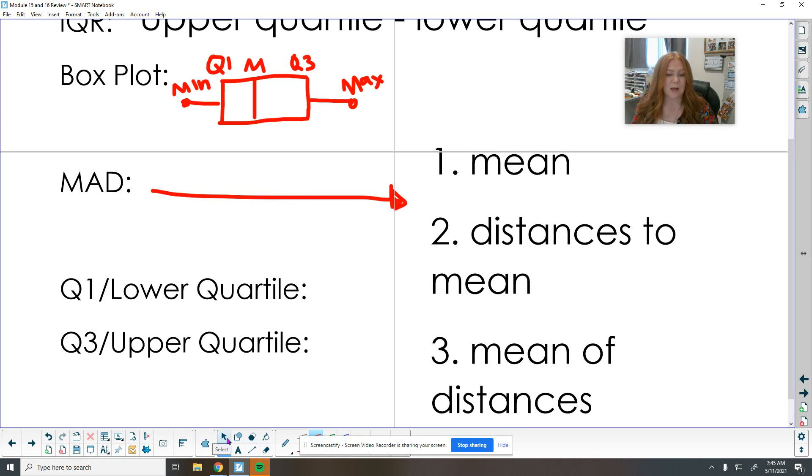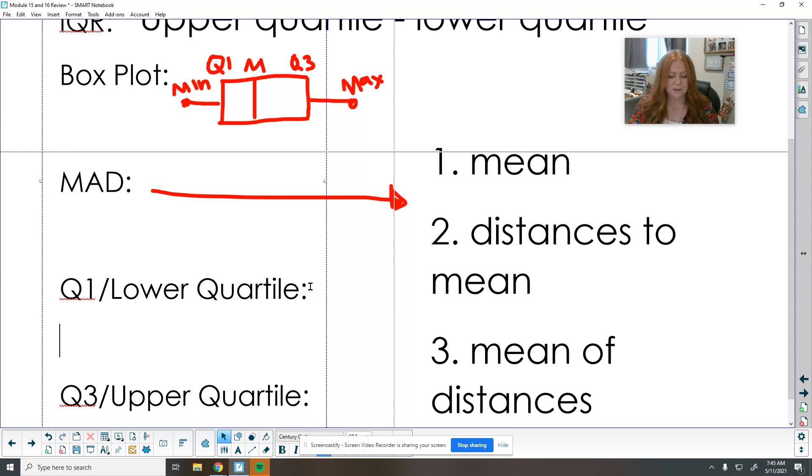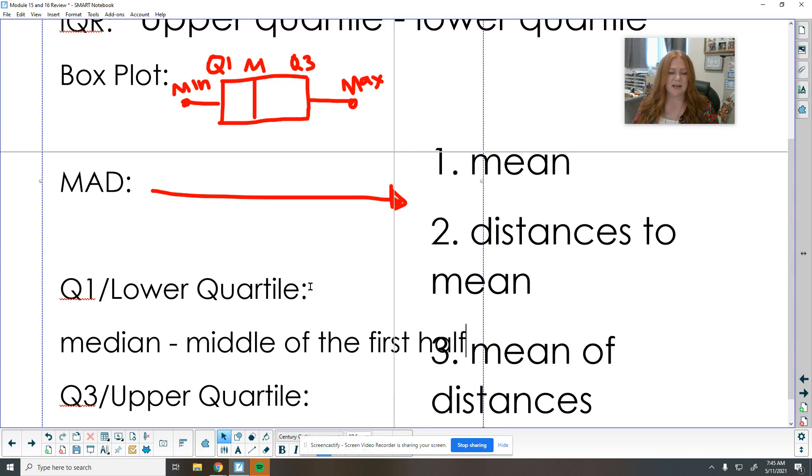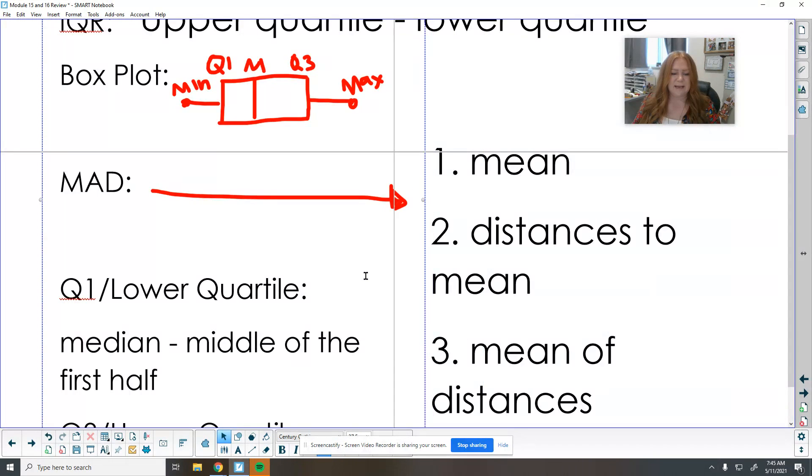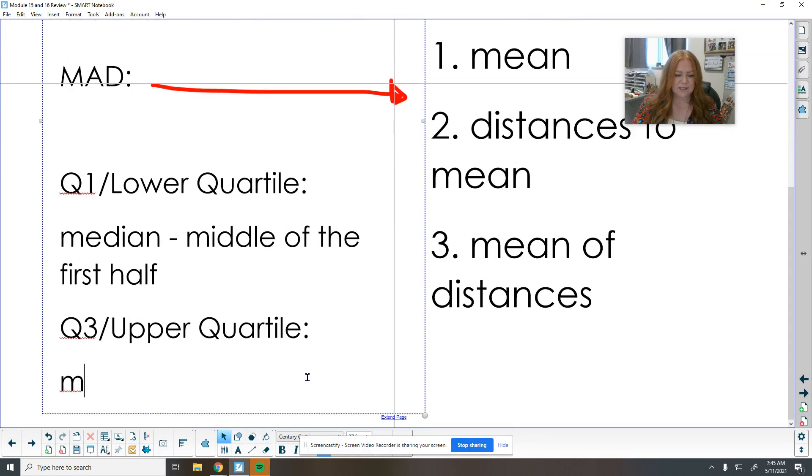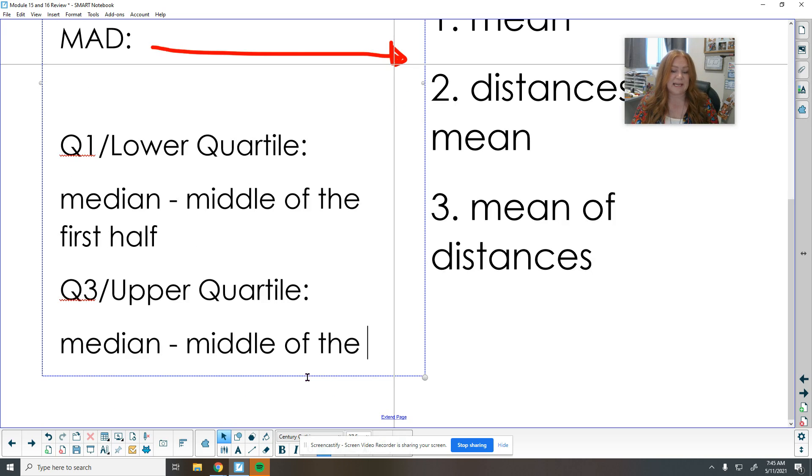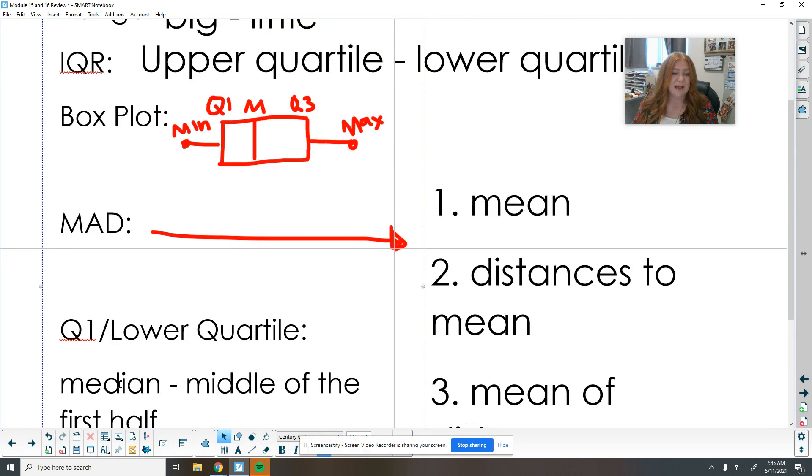To find Q1, first you have to find the median. Then we find the middle of the first half. And then to find Q3 or the upper quartile, we start with the median still. And then we find the middle of the upper or the second half of the data. So then we just split our data into four equal sections. And then we can see where are the numbers concentrated in this box plot.